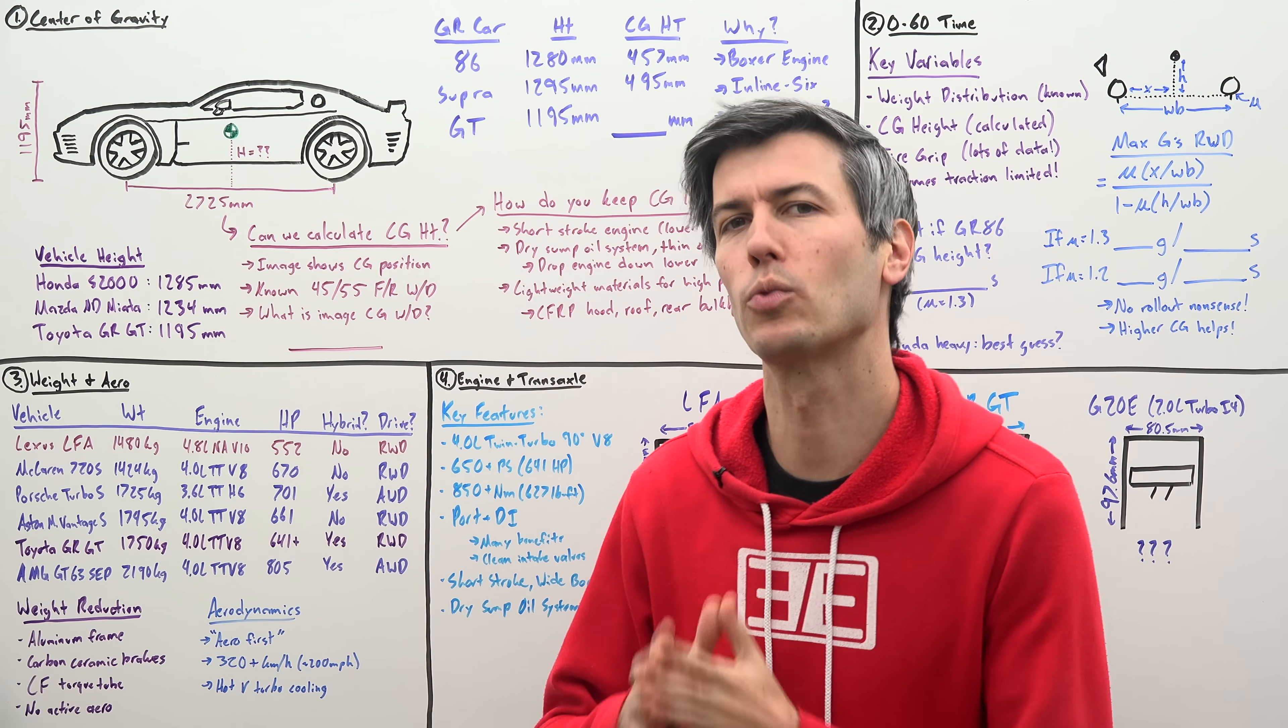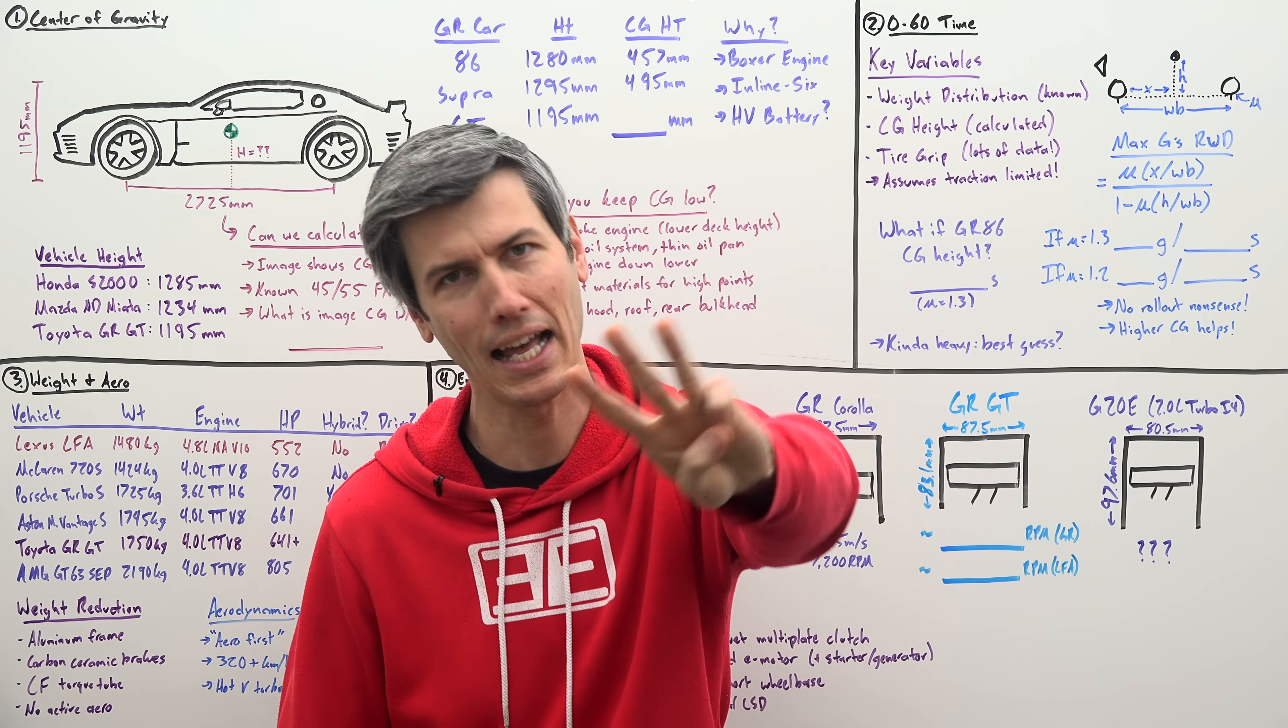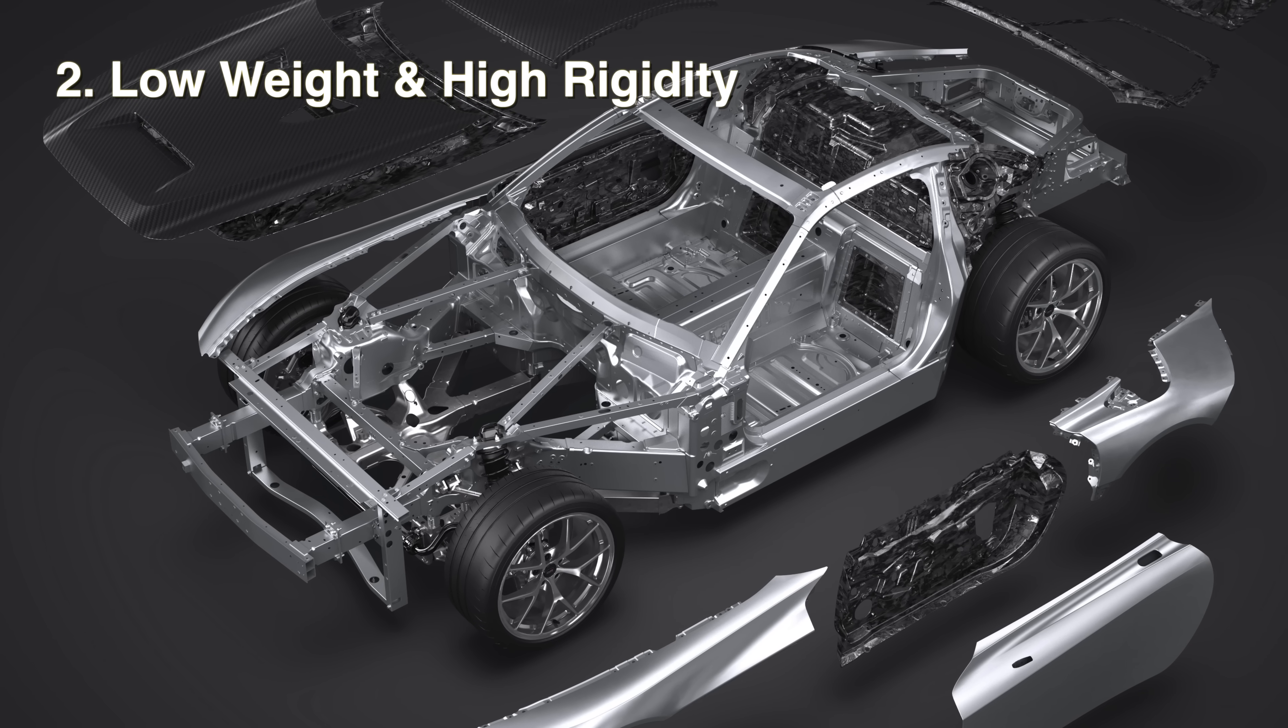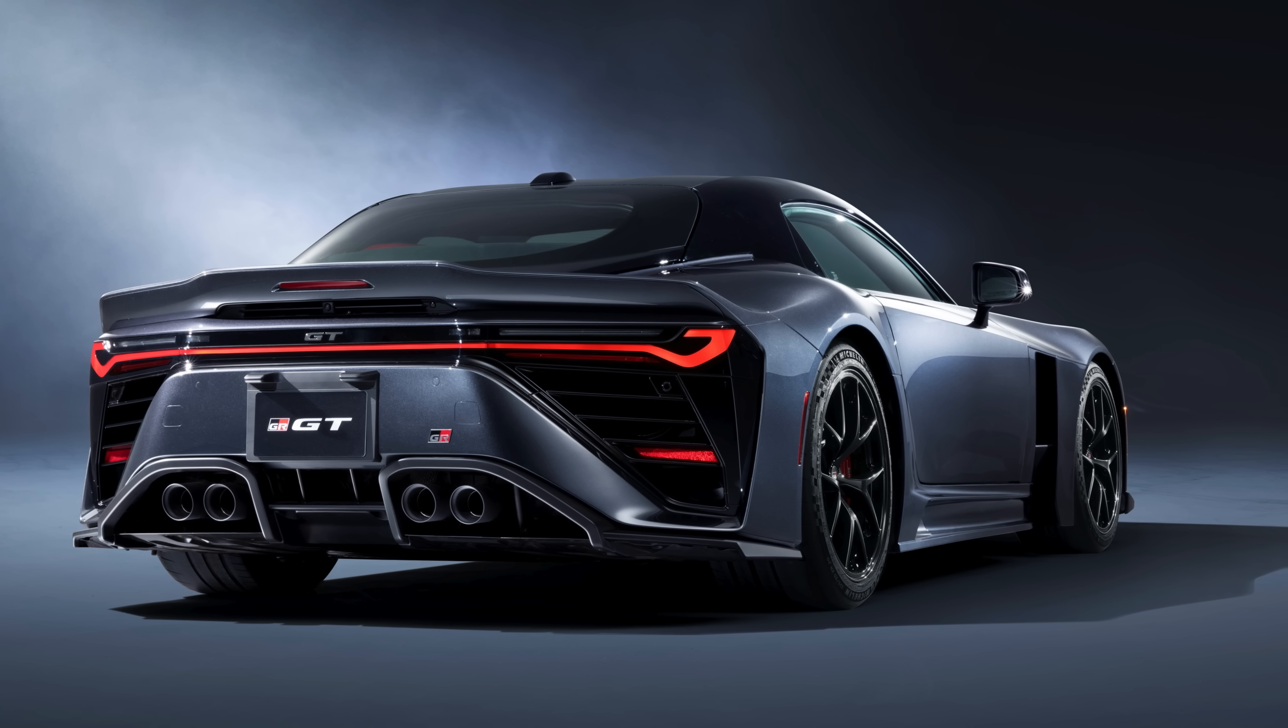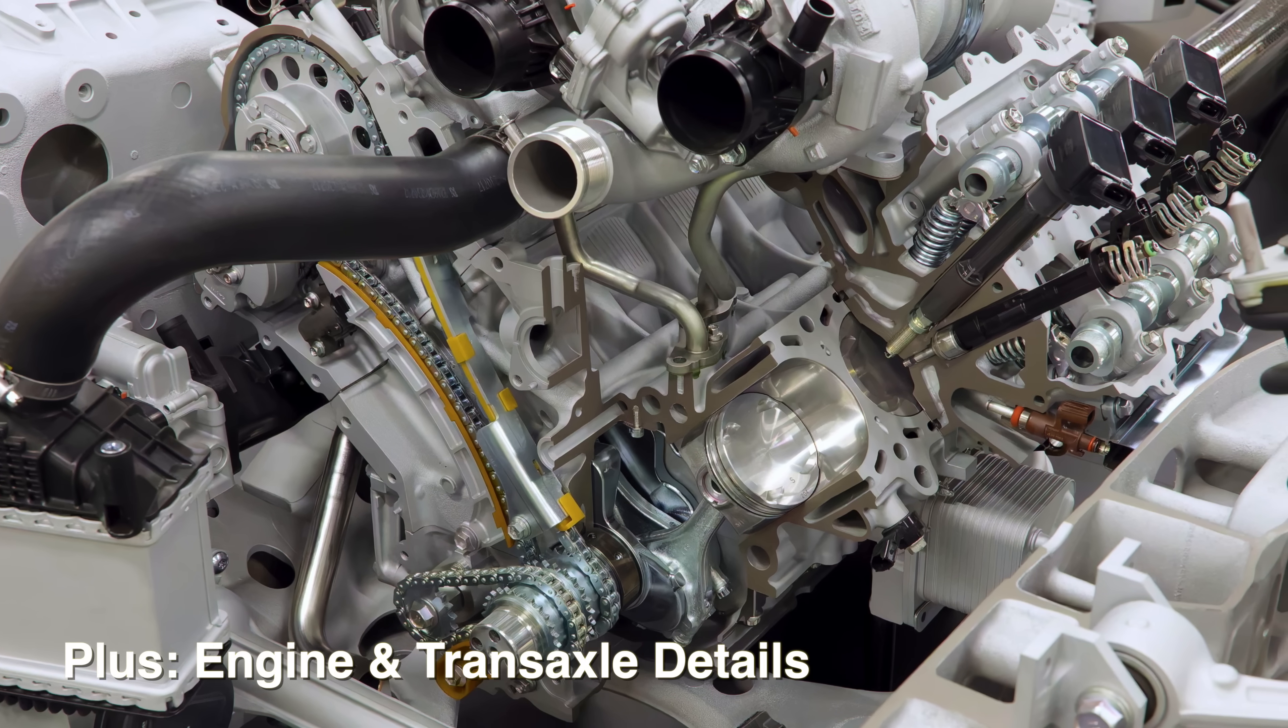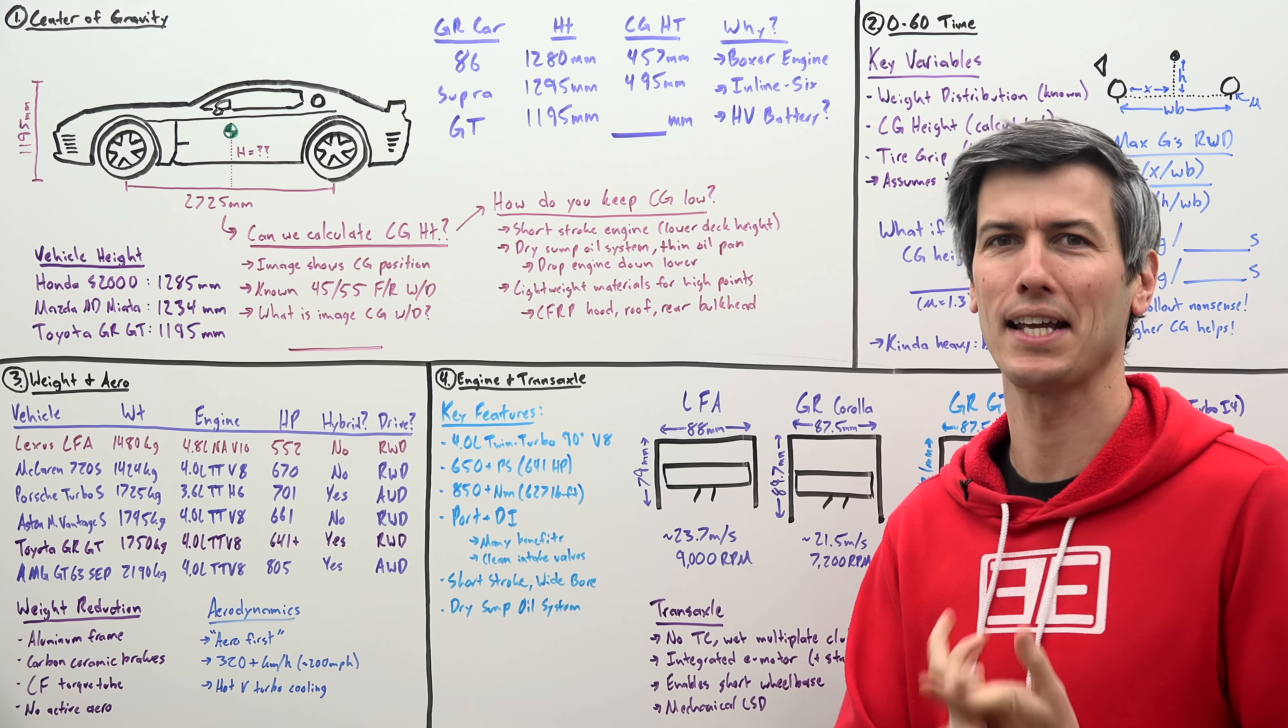Now, Toyota claims this road legal race car has had an unrelenting focus on three key elements. First, a low center of gravity. Second, low weight with high rigidity. And third, aerodynamic performance. So we'll look over these, but also estimate the zero to 60 time and talk through the engine and transaxle details. So let's start with that first key element, a low center of gravity.